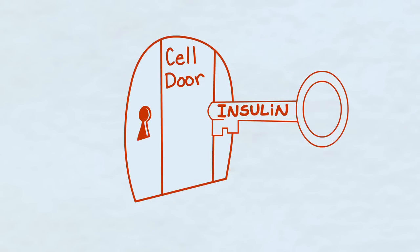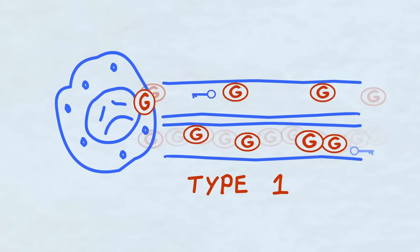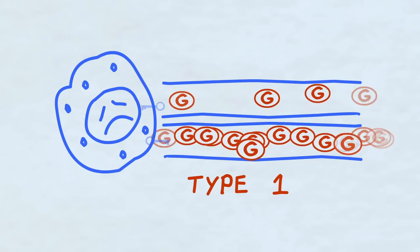If there aren't enough of the keys, enough insulin, as in type 1 diabetes, then glucose can't get into the cells and it builds up too much in the blood and causes damage.